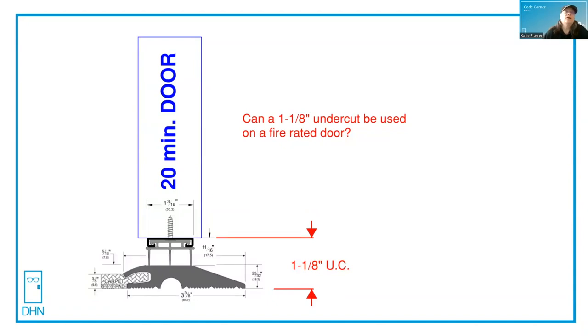This one on the screen happens to be the question: can I have an inch and an eighth undercut on a fire door? Yes, you can, because this has a raised non-combustible or listed threshold, or it could be over the flooring material. Again, as long as it's no more than three quarters of an inch from the bottom of the door over the top of the flooring or the threshold.